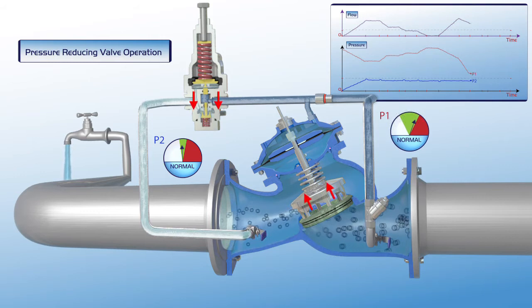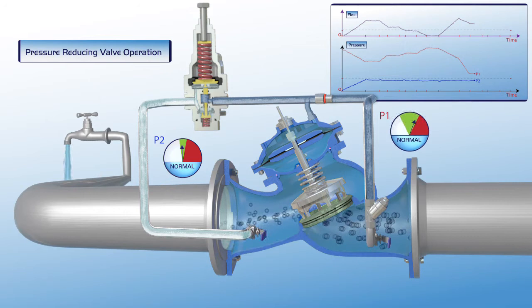As shown on the chart, at this stage, flow through the valve is constant, P1 upstream pressure is reduced to its regular green zone settings, and P2 downstream pressure remains stable.